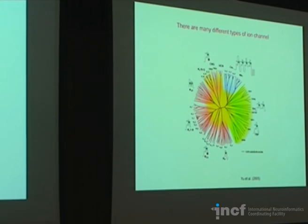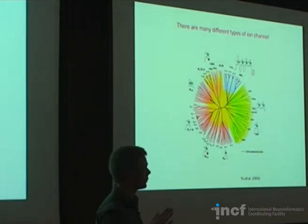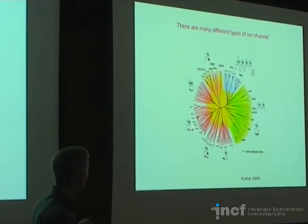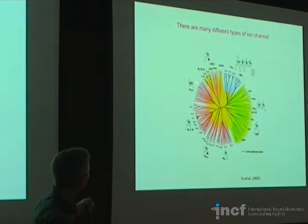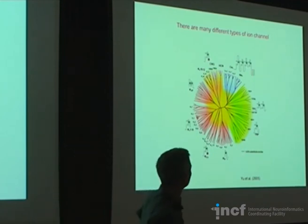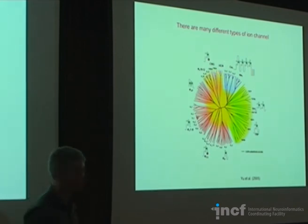There are not just one sodium, one potassium, and one chloride channel in the brain — there are hundreds of different types, classified in molecularly related families. These include voltage-dependent potassium channels, voltage-dependent sodium channels, and various other types such as channels that set the resting membrane potential and the HCN channels, which play other important roles in neuronal signaling.